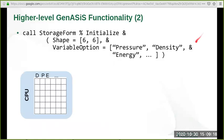Here's an example of how we initialize a storage form object. In this case, a rank-2 array is allocated on the host with six rows and six columns. The rows usually correspond to the cells on the mesh, and the columns correspond to the variables such as pressure, density, energy, and so on.